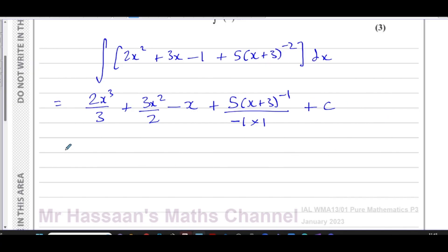So this gives me two over three x cubed plus three over two x squared minus x. There's a minus and that plus will give you a minus, and I can write this as five over (x plus 3) to the power of 1 plus c. So there's the answer to part b of the question, pretty simple once we've done part a.